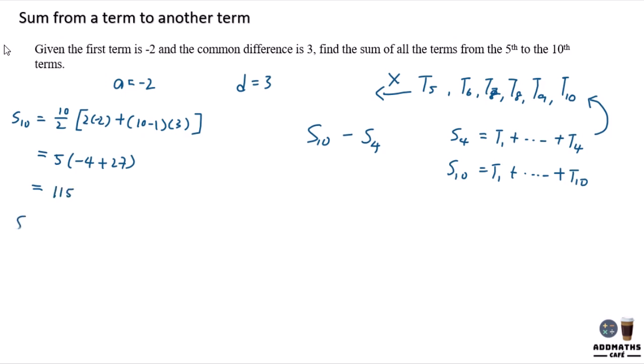And for S4, 4 over 2, 2a plus 4 minus 1 times 3. So this is 2, this is negative 4 plus 9. So you will have 10.